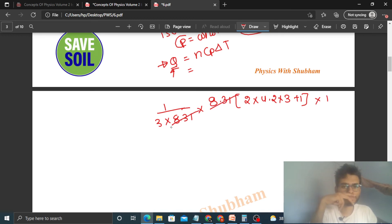So 8.31 cancels. So 3 in the denominator we can multiply. So it will be 2 into 4.2 plus 1 upon 3. This will be in Joule.